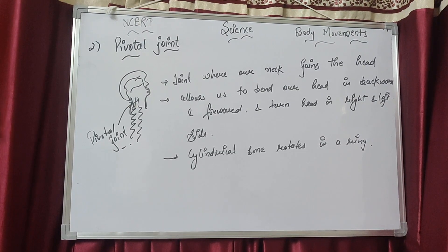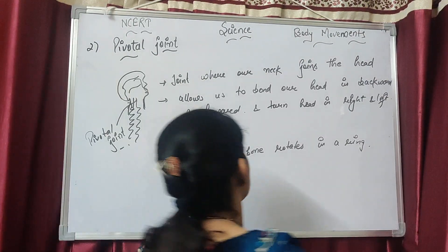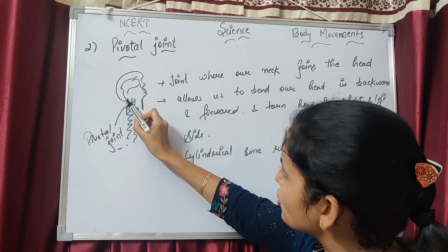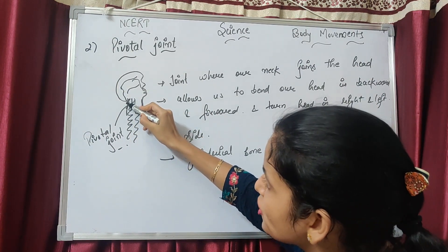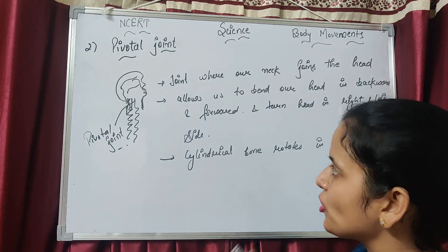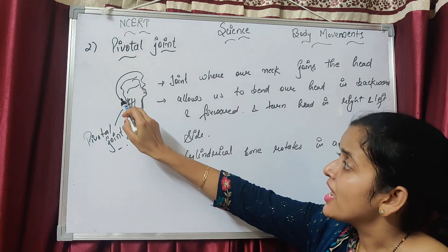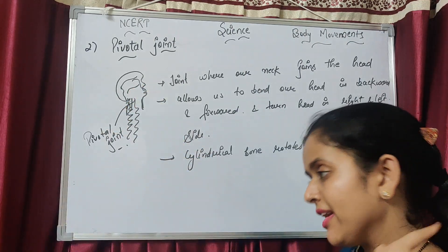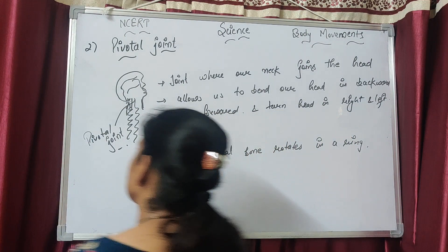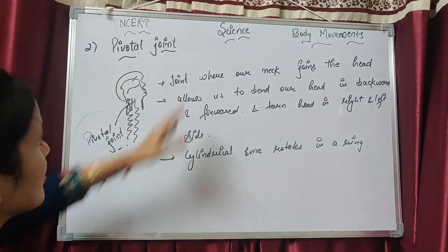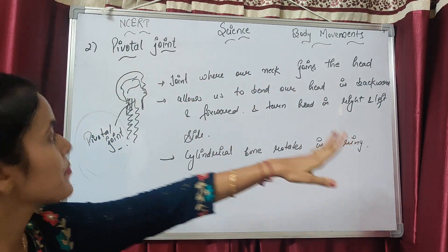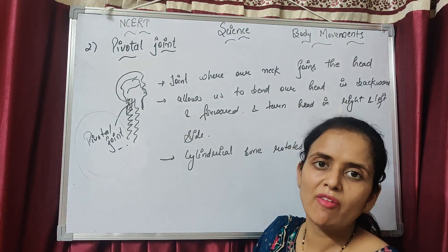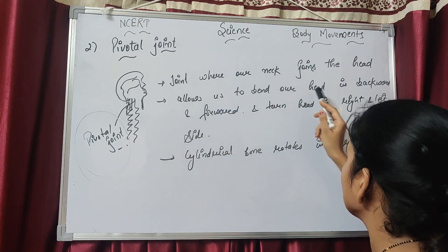The next joint is the pivotal joint. Look at this picture — where our neck is joined with the head. The point where our neck joins the head is known as the pivotal joint. Due to this joint, we can move our head in backward, forward, right, and left directions.